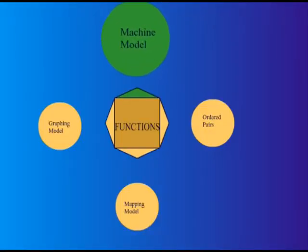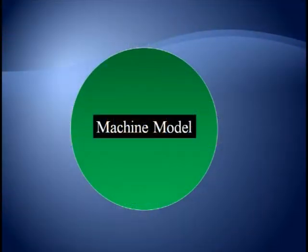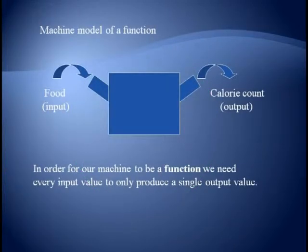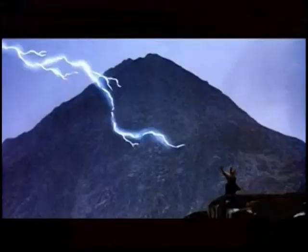Our first model for functions is the most intuitive. We usually call it the machine model. The idea here is that we will toss something into a machine, it will process our input and spit something back out. In order for our idealized machine to be a function, it has to meet the following requirement: every input value can only produce a single output value. In the end, there can be only one.